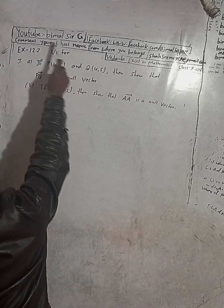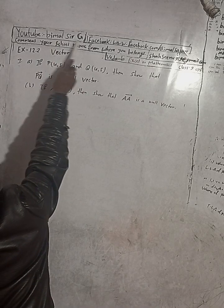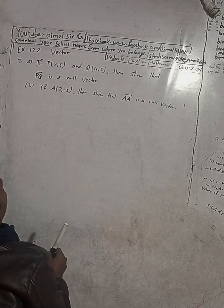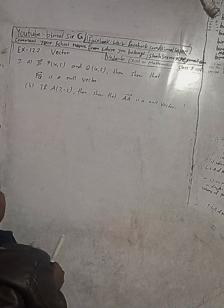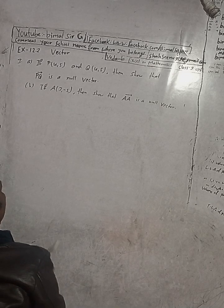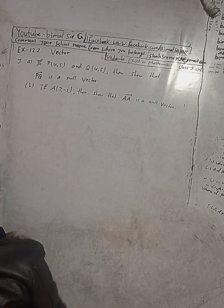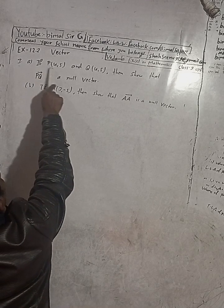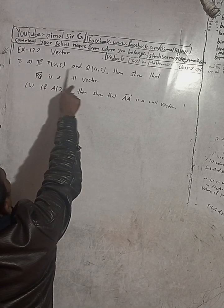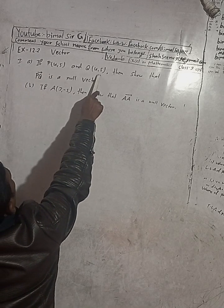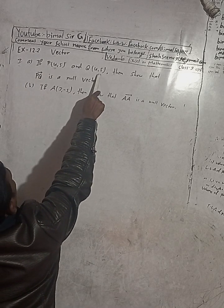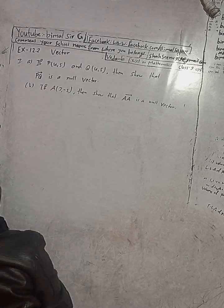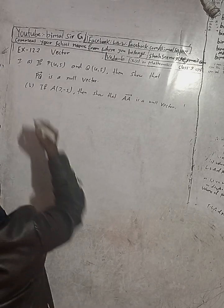Don't forget to check the playlist. Gimbal Sarji playlist contains many solutions, and the playlist is created with your exercise name. So the question is here: if P(4,5) and Q(4,5), show that PQ vector is a null vector. Solution: